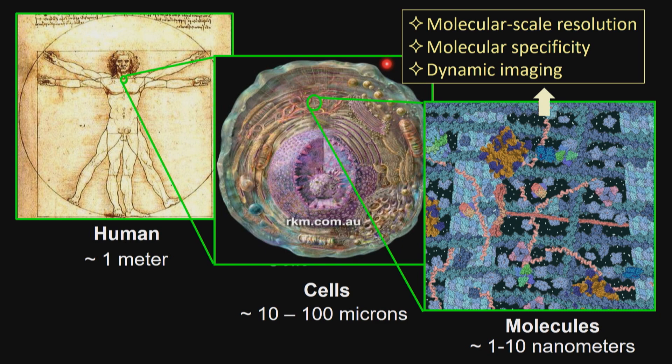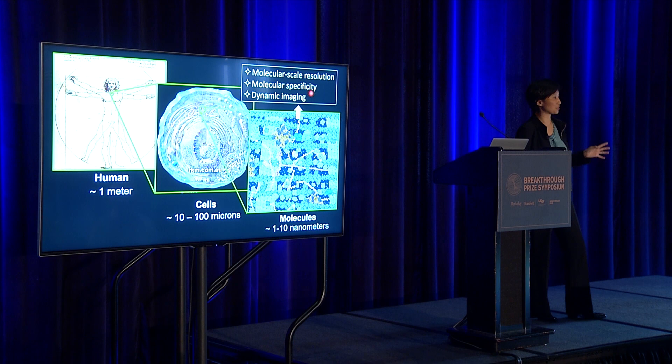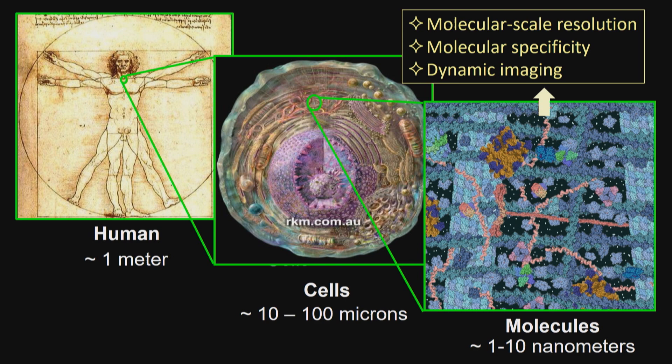If you think about it, you would like your imaging approaches to have certain properties. You would like them to have molecular-scale resolution. Because there are so many different kinds, you would like molecular specificity. And finally, because we are dealing with living systems where things are changing and moving all the time, we would like dynamic imaging capability. One of the imaging modalities does this pretty well, and that's light microscopy — especially on the fronts of molecular specificity, because light has so many different colors and we have many different color probes we can link to the molecule of interest with high specificity, and light microscopy can be compatible with living system imaging.